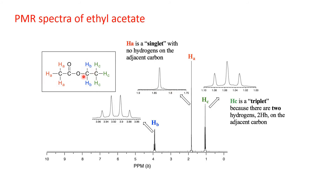Coming to the blue-colored OCH₂ protons: they are attached to a carbon directly connected to the strongly electronegative oxygen atom, so electron density is less and they are in the deshielded region. Their absorption peak comes at downfield. Moreover, the neighboring carbon has three protons, so the PMR signal splits into four (3+1), giving a quartet in the ratio 1:3:3:1 at downfield.